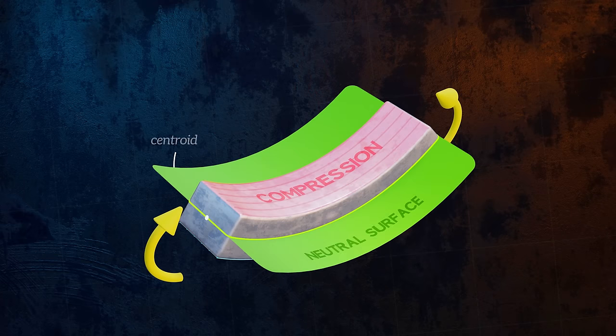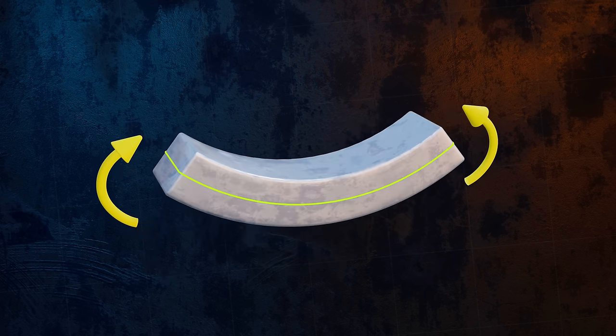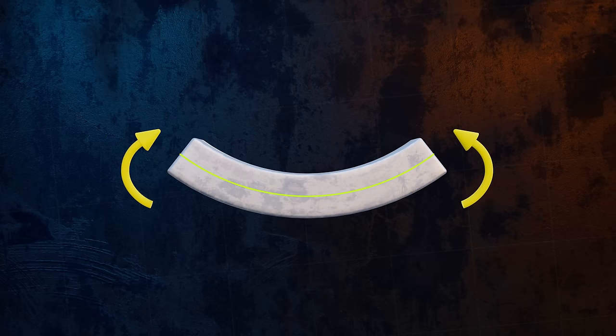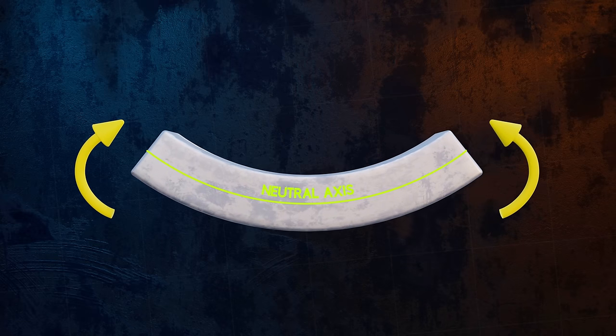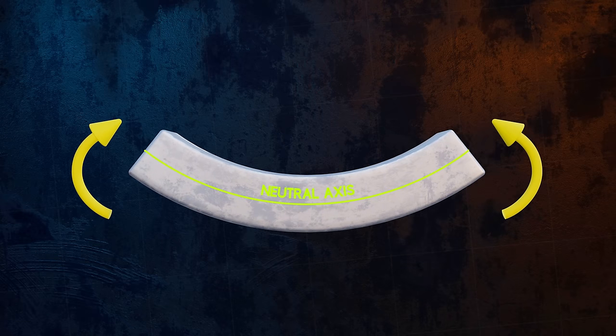It passes through the centroid of the cross-section. When looking at the beam in two dimensions, we refer to it as the neutral axis. Let's try and quantify the bending stresses that develop within the beam to resist these applied moments. First, let's calculate the strains in the beam. This can be done quite easily just by considering the geometry of the deformation.